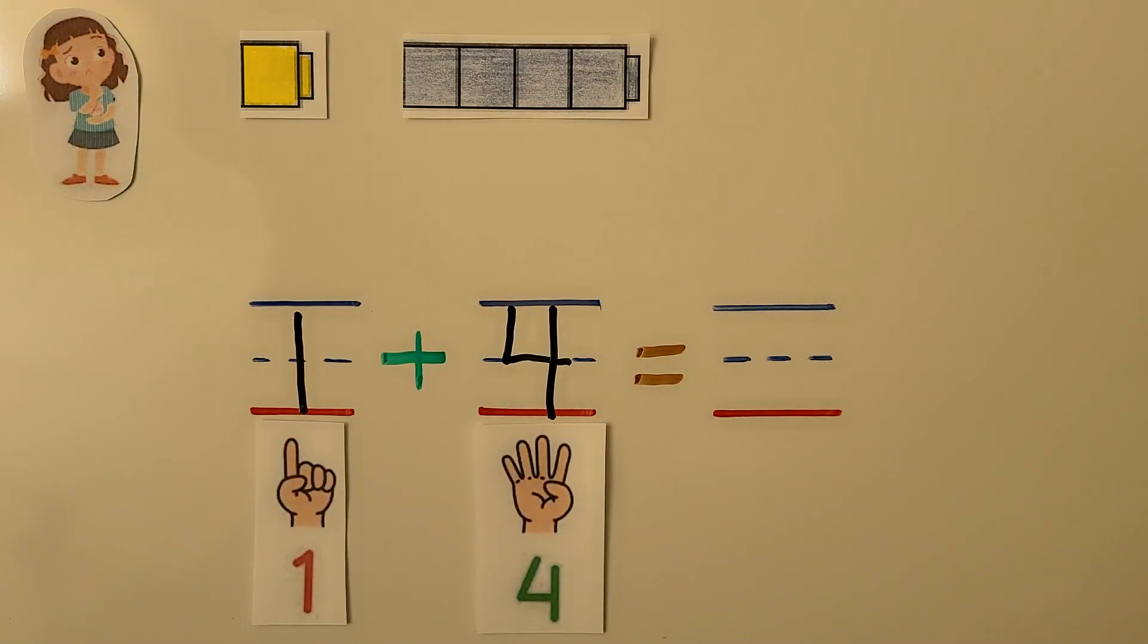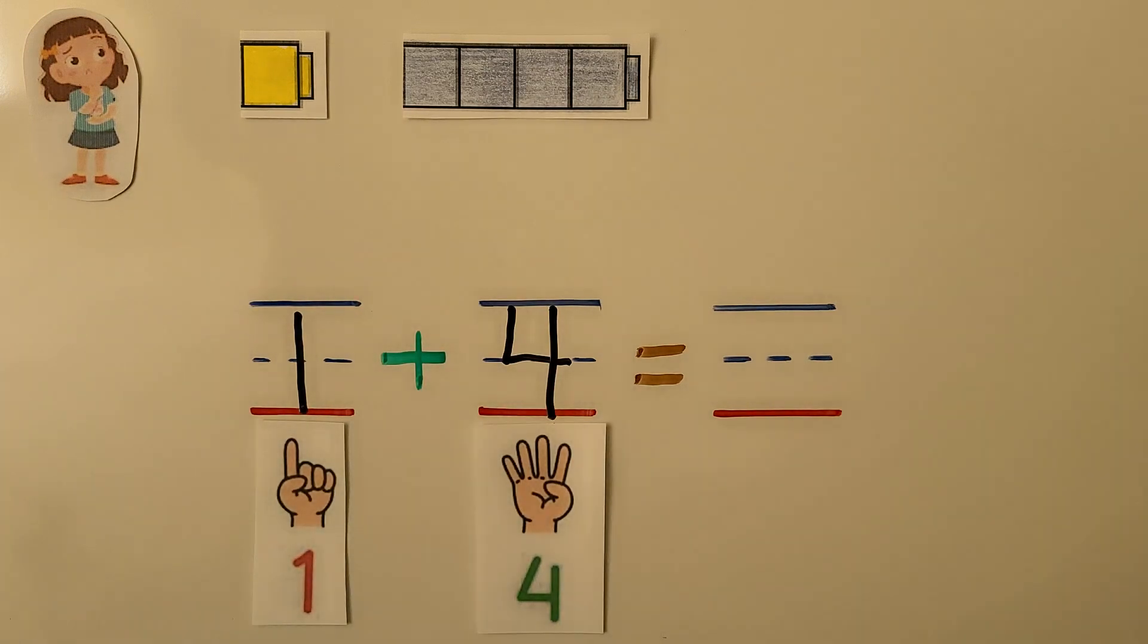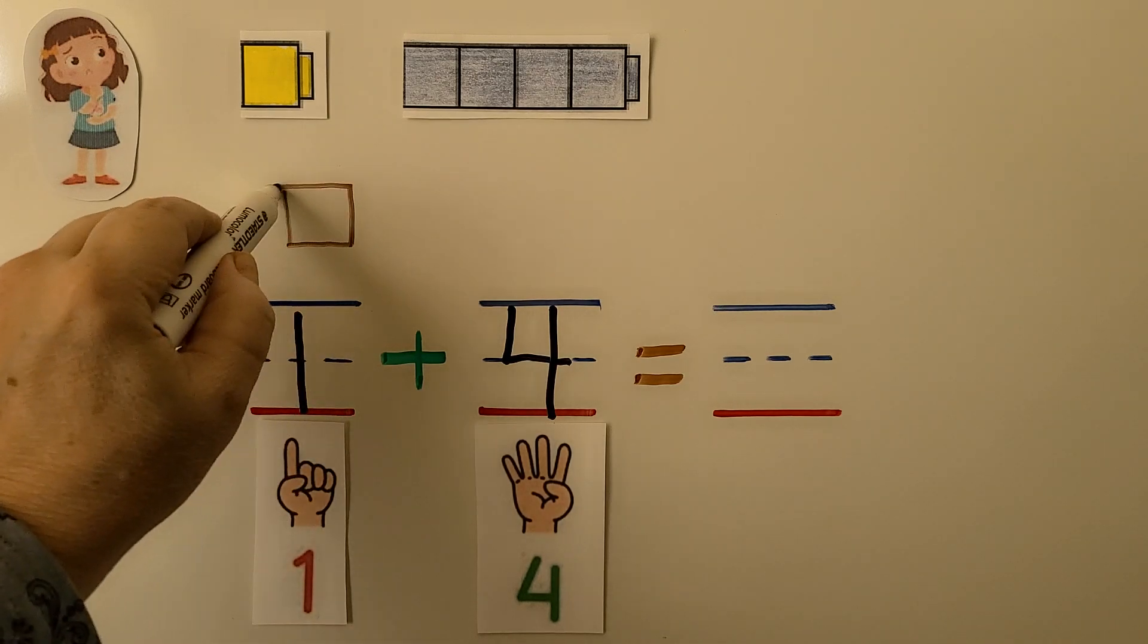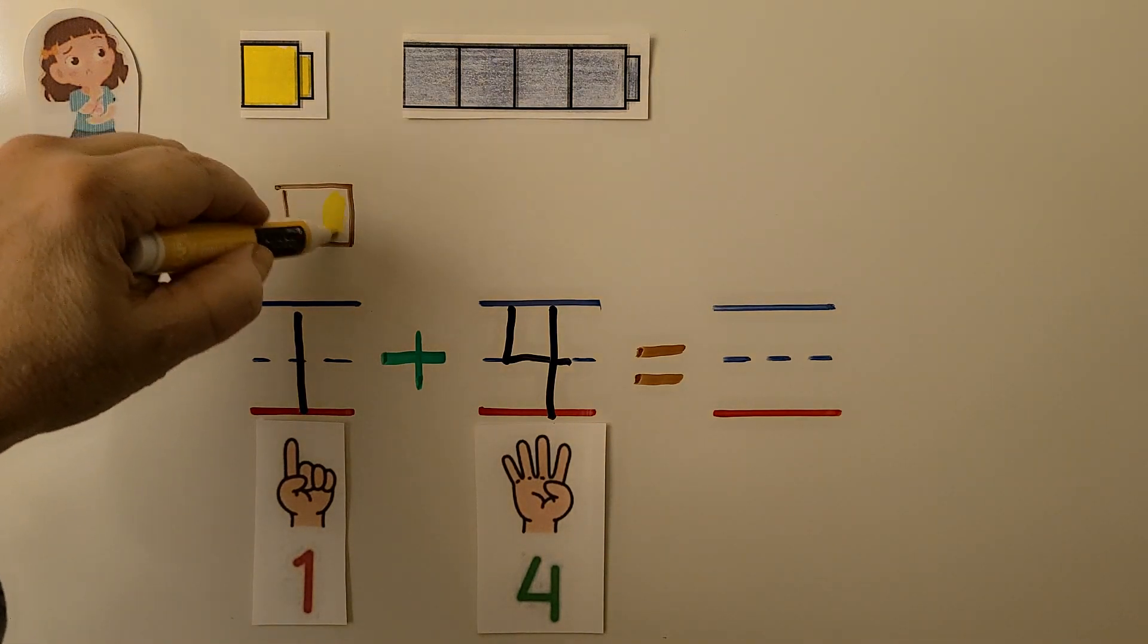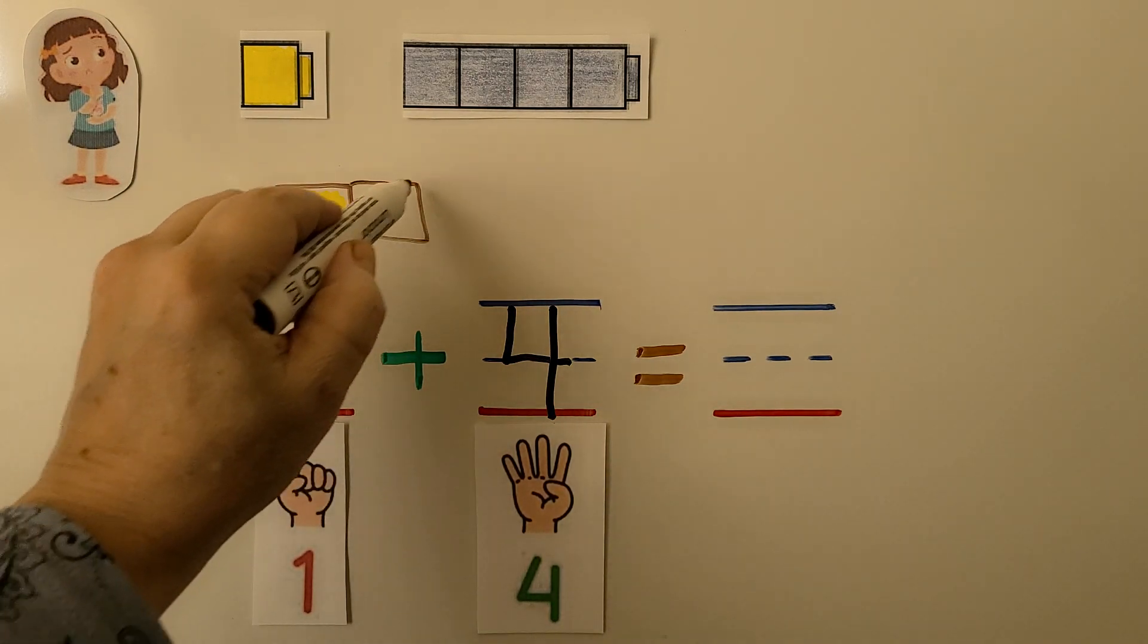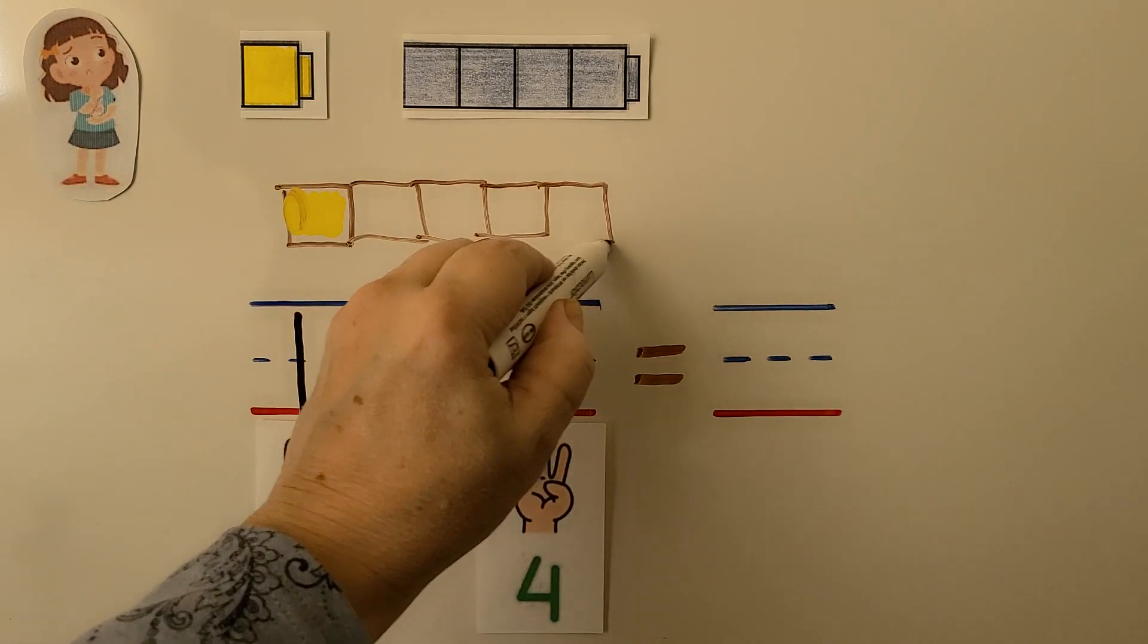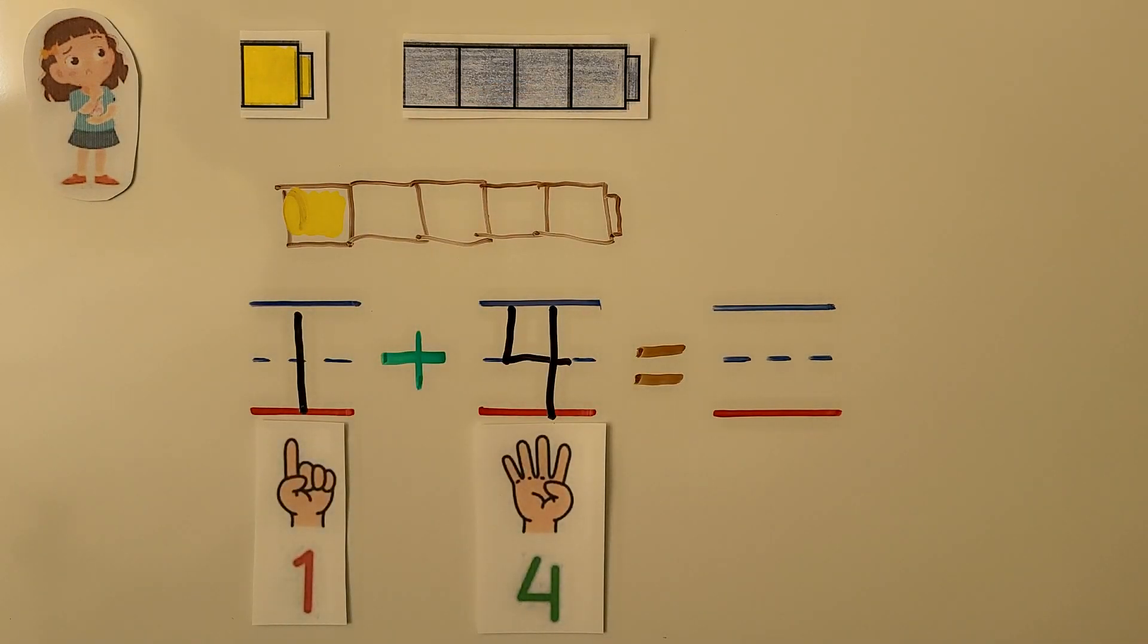We can add one plus four by making a cube train and counting the cubes. We have one cube train here. So we're going to draw a cube train. Here would be the one yellow one. We can color it yellow. And then we have four blue. One, two, three, four. And then it's got that little bump at the end because it's a cube train. And we can color those blue.